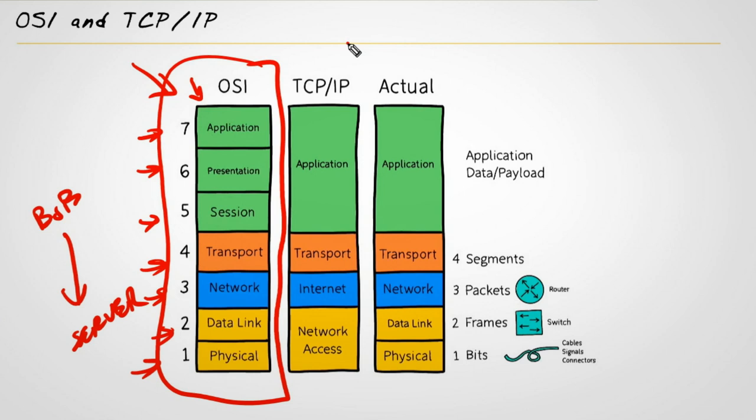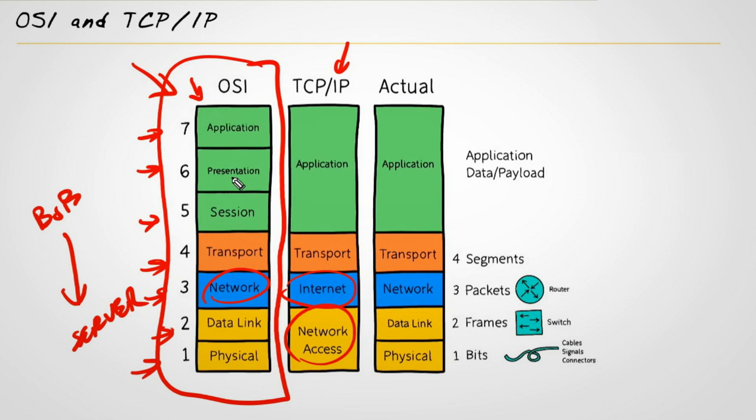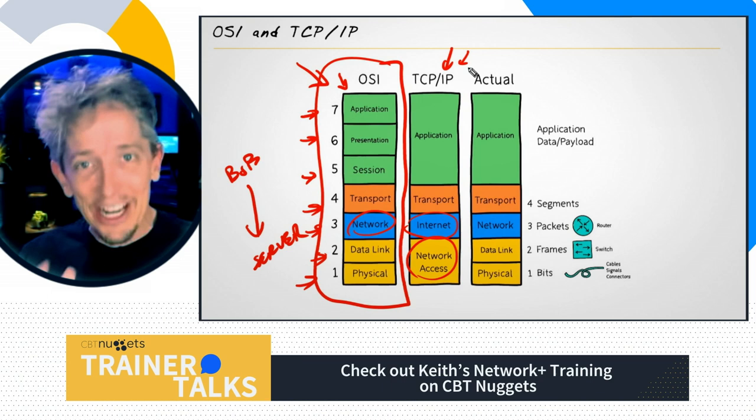TCP/IP was developed by the Department of Defense and it has four layers. There are some slight differences between the OSI reference model and the actual TCP/IP stack that we use. What we did was borrow some of the names and change some of the numbers. Let me share with you what we literally use today, including the names and numbers of those layers.